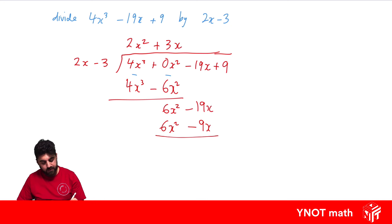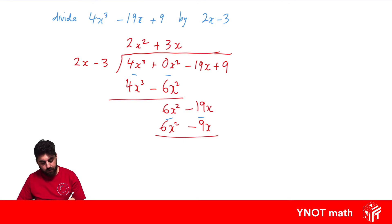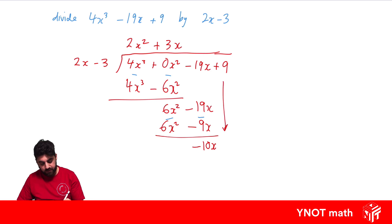Now we subtract: 6x squared minus 6x squared is 0. Then minus 19x minus minus 9x gives us minus 19x plus 9x, so we get minus 10x. We bring down our next term, positive 9, and repeat the process.